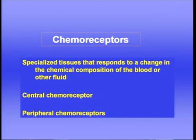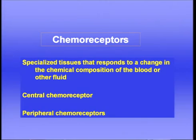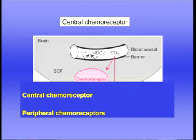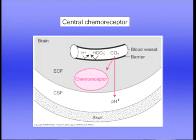Let's now move to the central chemoreceptor. A chemoreceptor consists of specialized tissue that responds to a change in the chemical composition of the blood or some other fluid. As far as the central chemoreceptor is concerned, it's the extracellular fluid of the brain that's the important fluid. As far as the peripheral chemoreceptors are concerned, it's the arterial blood that is sensed.